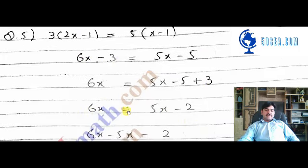Next, we have 6x minus 3 equals 5x minus 5. Adding the numbers, 6x minus 3 equals 5x minus 5 plus 3, which gives us 6x equals 5x minus 2.